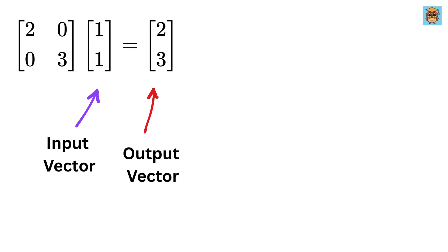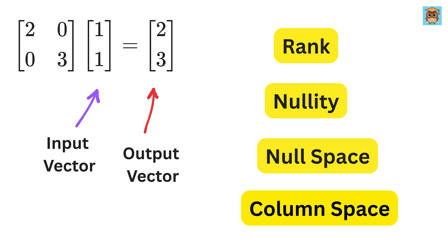That's when ideas like rank, nullity, null space, and column space start popping up.